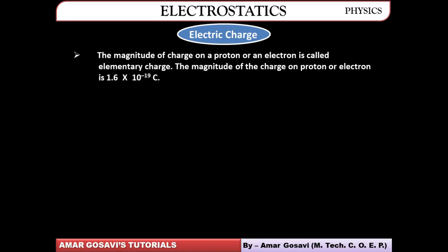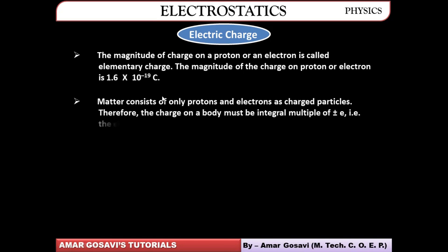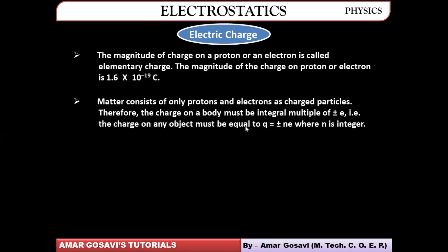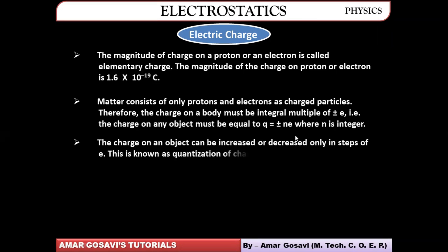Whenever we talk about electric charge, the magnitude of electric charge will be equal to the charge on a proton or electron. The charge on a proton is 1.6 × 10⁻¹⁹ Coulombs. When we talk about the total charge on any matter, it will be an integral multiple of the charge on the electron. So the total charge q on any object will be q = ±ne, where n is an integer and e is the charge on the electron.